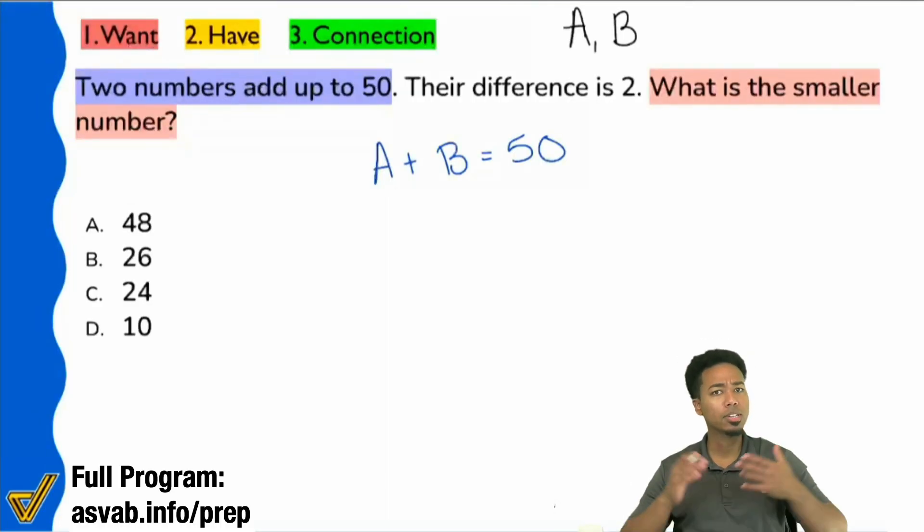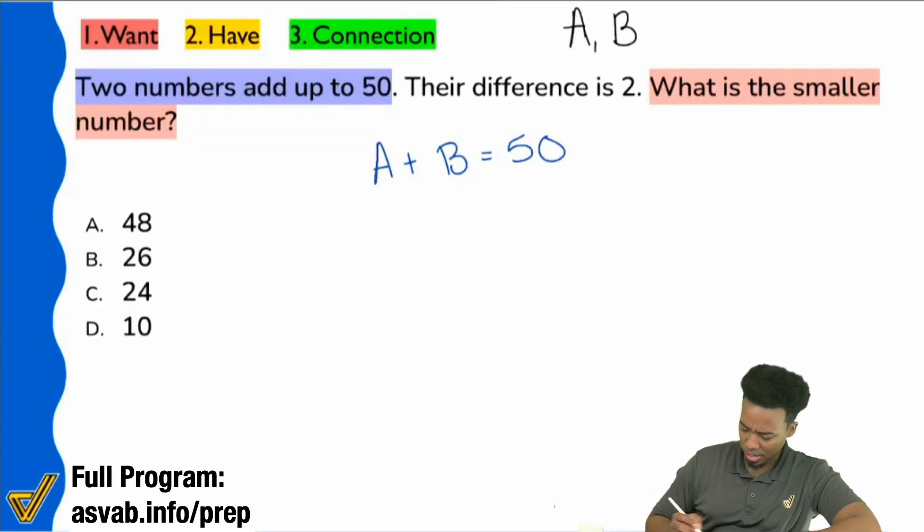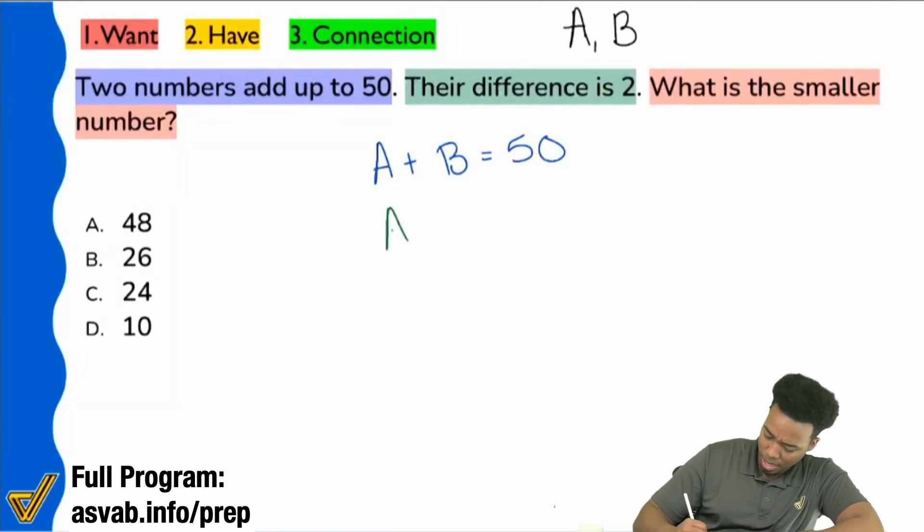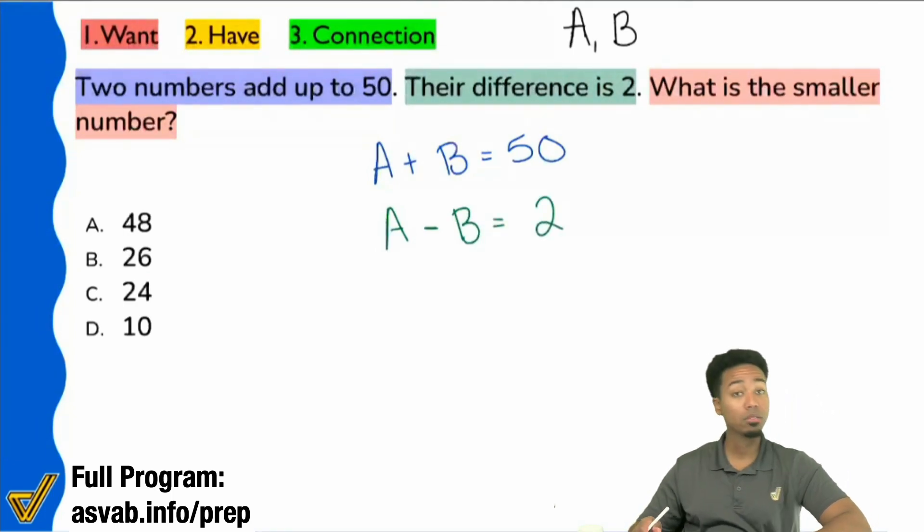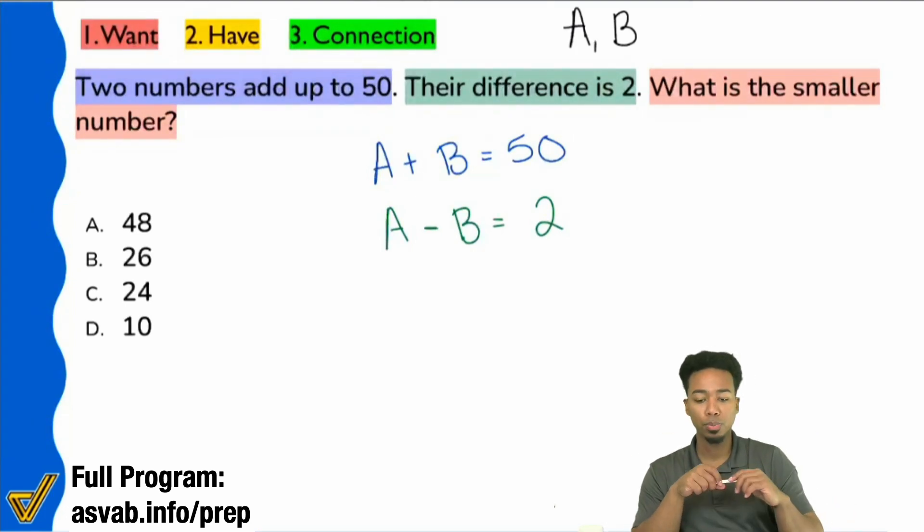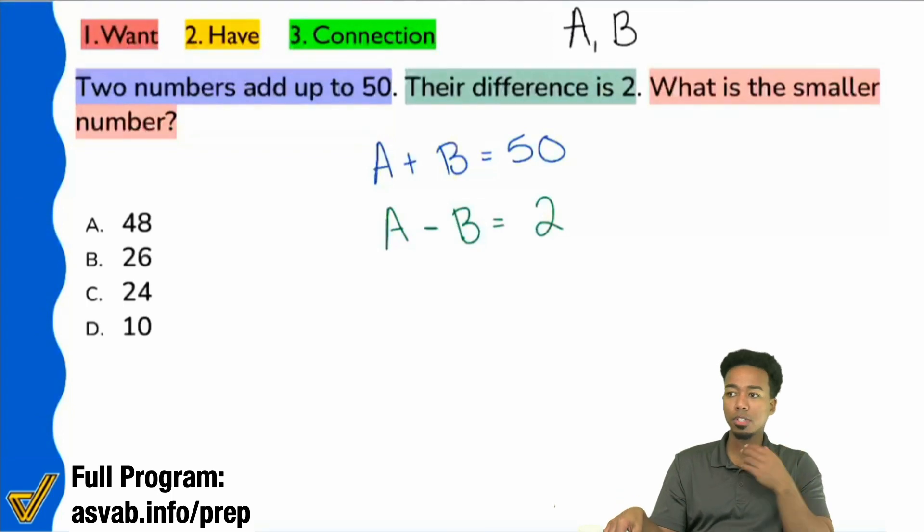So everybody, is it okay if I write it like this? If I say, you know, I'm going to highlight this in green. And is it okay if I write A minus B equals two? Is that fair? Their difference, if you subtract them, you get two. Okay, cool. So I hope that you guys are starting to see the difference or the distinguishment between those two things that I've been talking about.